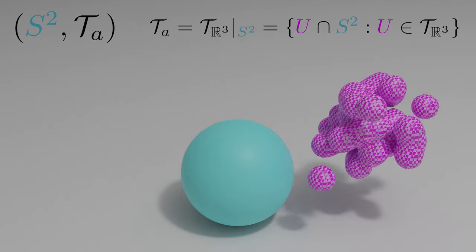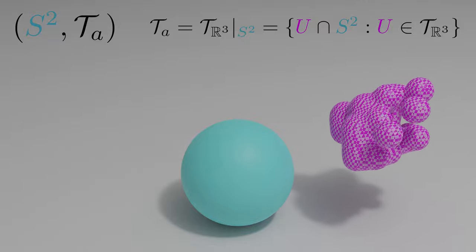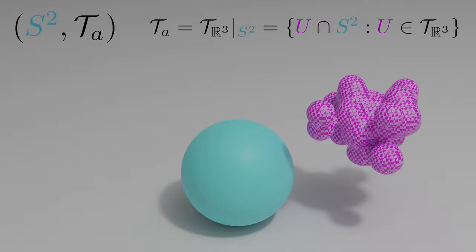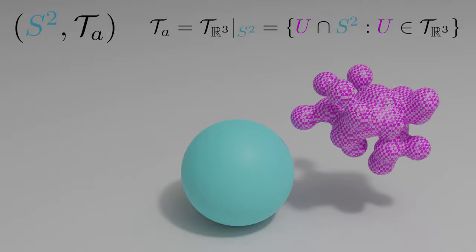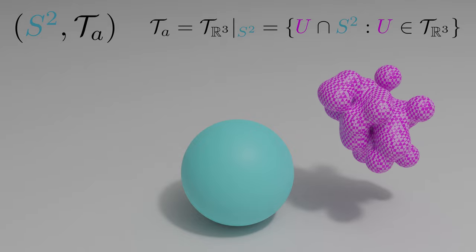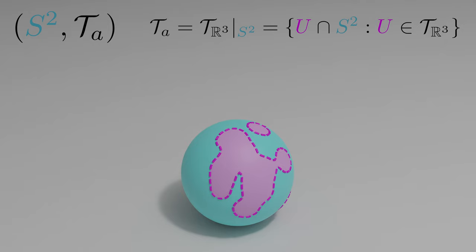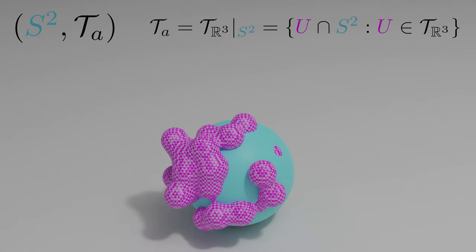I gave this blob a checkered texture to indicate that the boundary limit points are not included, similar to how we used dashed lines in R2. We can form an open subset of our sphere by intersecting one of these blobs with the sphere. If we do this with all the open subsets of R3, we get all the open subsets of our sphere.